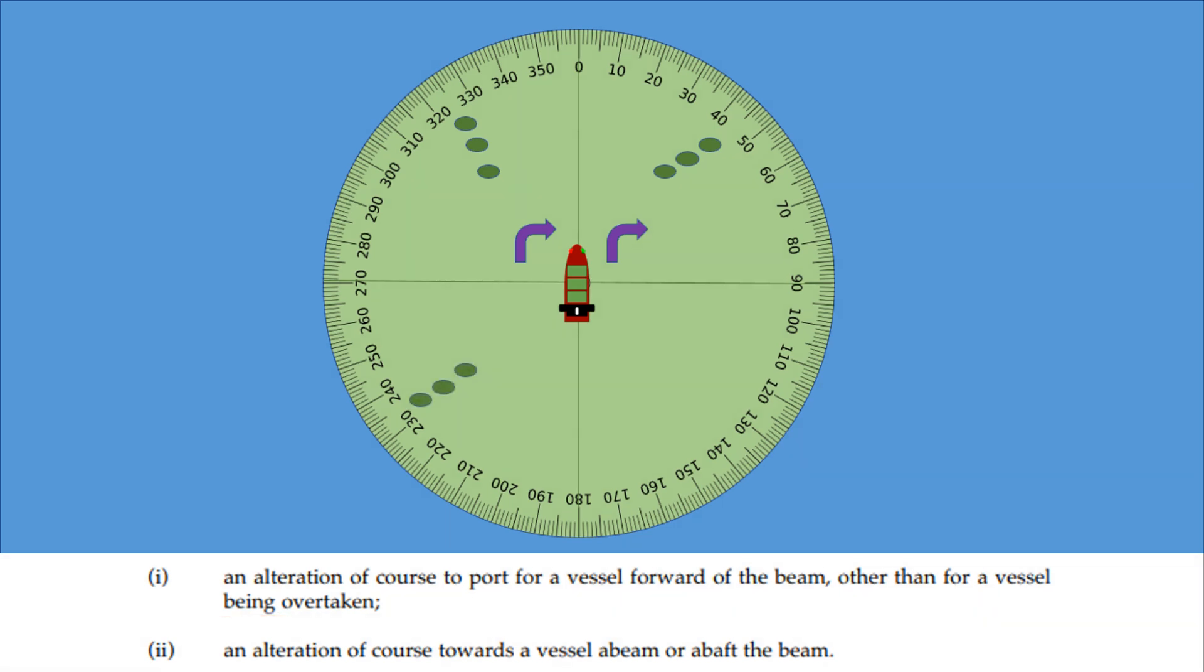The rule goes on to say avoid an alteration of course towards a vessel, a beam or above the beam. So here on our port quarter, again Rule 7, we've systematically detected a vessel and we're going to turn to starboard. We're going to turn away from that vessel because on the port side there, we need to avoid turning towards it. And finally, we've detected a vessel, as per Rule 7, in our starboard quarter. This is the only quadrant then, under which we will turn to port, because we need to avoid an alteration of course towards a vessel, a beam or above the beam.